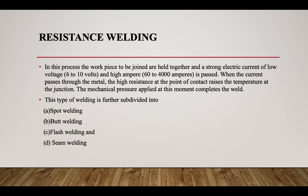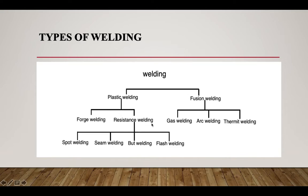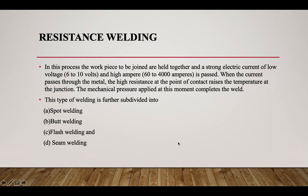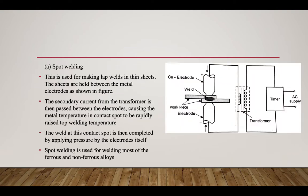Spot welding is a type of resistance welding used for making lap welds. In a lap weld, one workpiece sits over the other. The thin sheets are held between metal electrodes. The secondary current from the transformer is passed between the electrodes, causing the metal temperature at the contact spot to be rapidly raised.